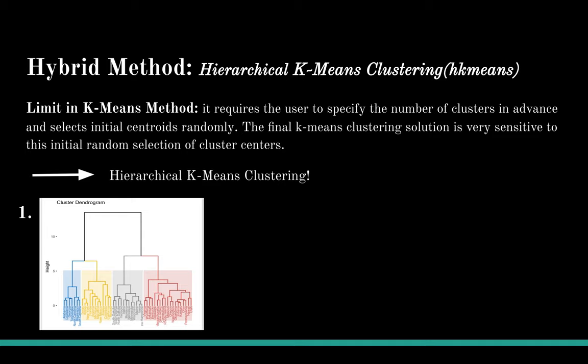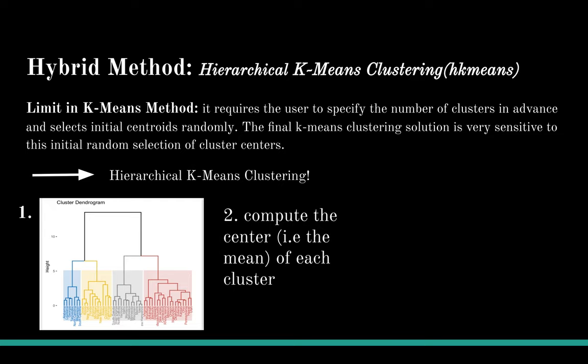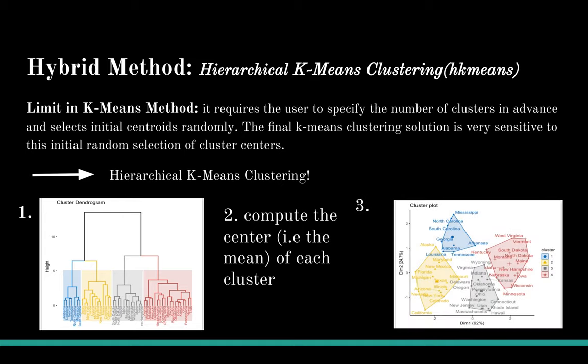The H-K-means algorithm is summarized as follows. First, compute hierarchical clustering and cut the tree into K clusters. Next, compute the center of each cluster. Then, compute K-means using the set of cluster centers as the initial cluster centers.